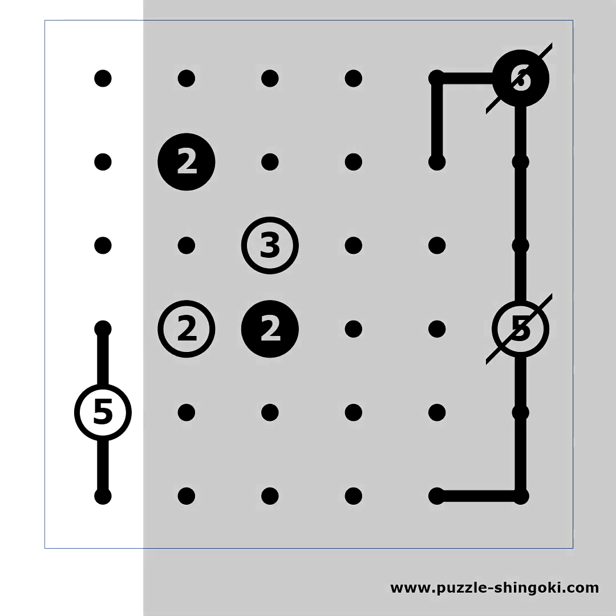The 5 on the left has a space for exactly 5 steps line, so it should go all the way from the top to the bottom. We can mark the 5 clue as completed. Both ends of this line must make a turn to the right.